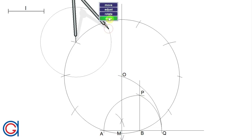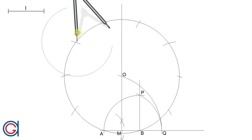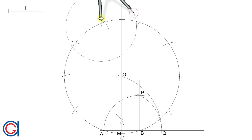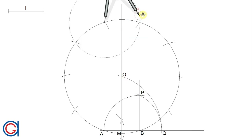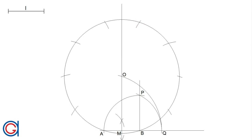The next step is to name these vertices from A to J. You can check that our vertices are correctly aligned to confirm that we were working with accuracy — and we can see that they are.